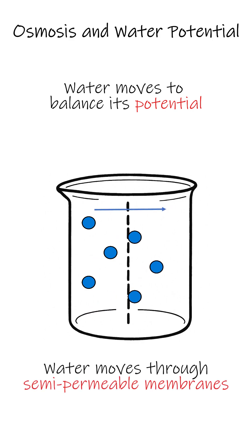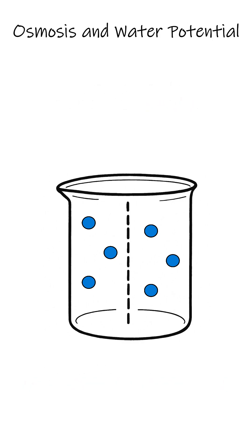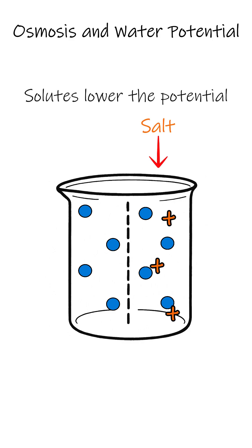What's tricky about osmosis is that when we add things to water that can be dissolved, or solutes, this can affect the water potential. On the right side of the beaker, we've added three molecules of salt. That side now has less water in comparison to the total amount of molecules in it.